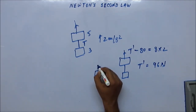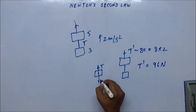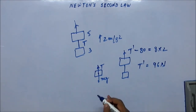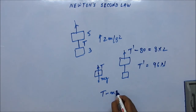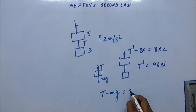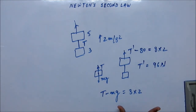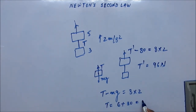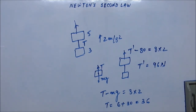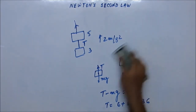From the FBD of the 3 kg block: net force upward is T minus mg, equal to mass times acceleration. So T minus 30 = 3 × 2 = 6, giving T = 36 N. That is the tension in the string for this situation.